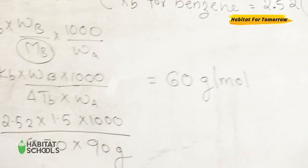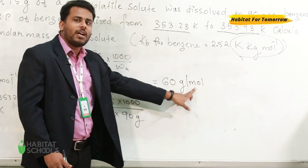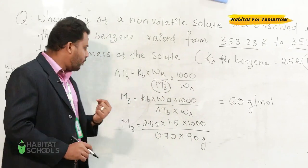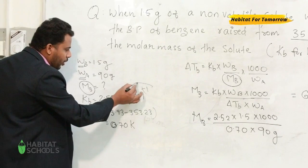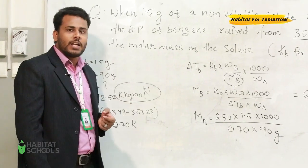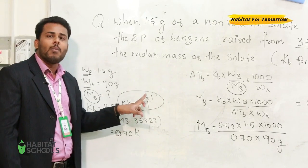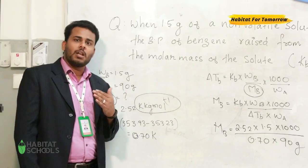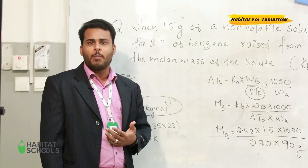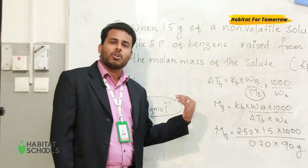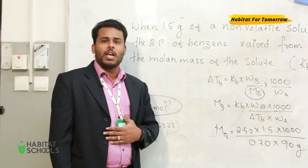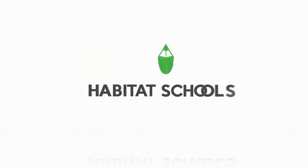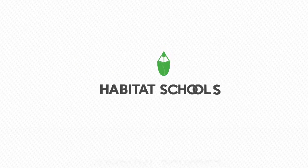When answering a numerical, we must write the unit of the final answer. From this numerical, note that the unit of the ebullioscopic constant is Kelvin kilogram per mole. I hope the concept of boiling point elevation and how to calculate the molar mass of a solute using elevation of boiling point is clear to you. Thank you.